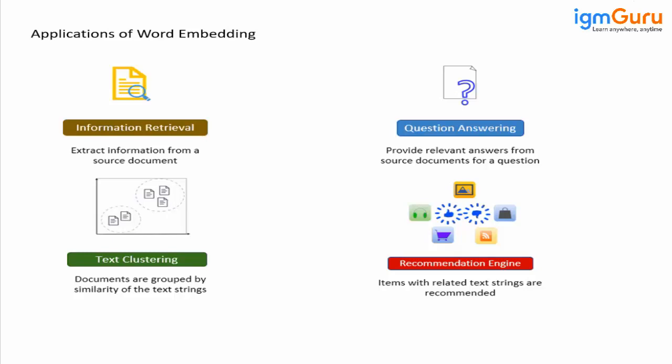The next task is text clustering. In text clustering, once my document or paragraph is represented as a vector, I can easily check whether two vectors are similar to each other. So once I find the vector representation of my document, I can easily perform text clustering or document clustering.